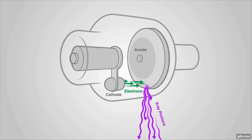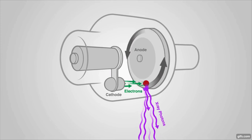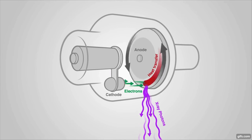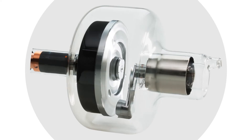As electrons come over from the cathode to the anode, they bombard the target, producing a lot of heat. To spread that heat over a large area, the anode spins, allowing the heat to transfer and not be confined to one point. Other benefits of a rotating anode include allowing for a higher tube current, which means we can have a shorter exposure time.